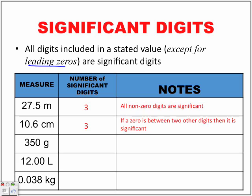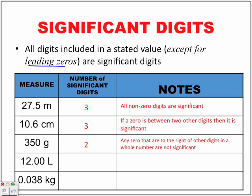350 grams — this has two significant digits. Any zeros that are to the right of other digits in a whole number are not significant. For example, 350 or 100,000 — here we have only one significant digit because all those zeros don't count as significant digits. Those zeros are there just to represent the size of the number.